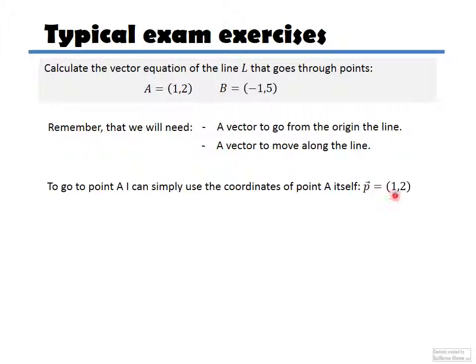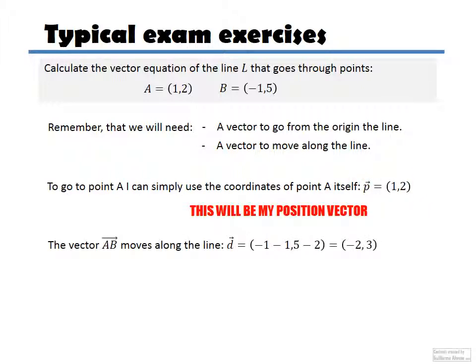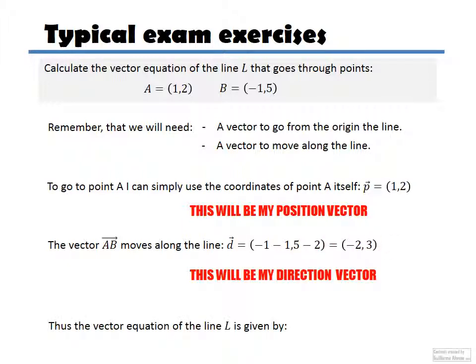So here's my position vector (1, 2). That's to go from the origin to point A. And vector AB moves along the line, so all I have to do is do B minus A, and that's going to give me (-2, 3). And hence, that's my direction vector, and the equation of the line would be this one here.